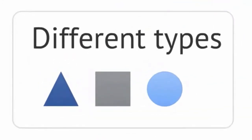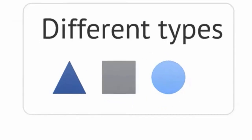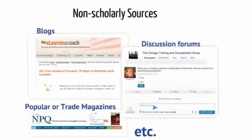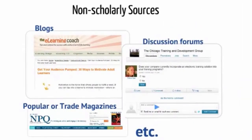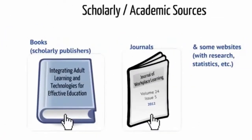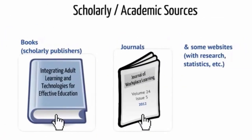First, let's take a look at different types of resources. We all rely on informal sources of information, or non-scholarly information, such as websites, blogs, discussion forums, articles published in popular magazines, etc. But for certain information needs, there are scholarly or academic sources, such as books, articles published in journals, some websites, etc.